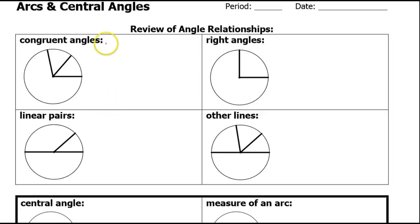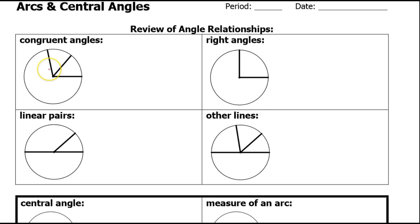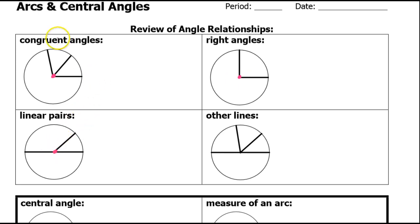Today we are going to talk about the relationship between arcs and central angles. A central angle is just an angle that has the vertex at the center. So all of these angles are central angles because the vertex of each angle is at the center of the circle.